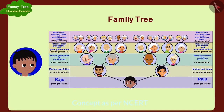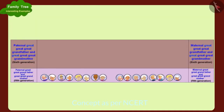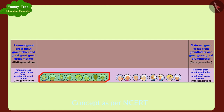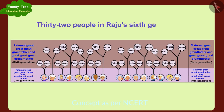If I make my sixth generation, how many people will be there in it? Children, can you tell how many people will be there in Raju's sixth generation? If you wish to, you may stop the video and find the answer. To make Raju's sixth generation, we need to add the parents of his maternal and paternal great-great-grandparents to his family tree. In this way, there will be 32 people in Raju's sixth generation.